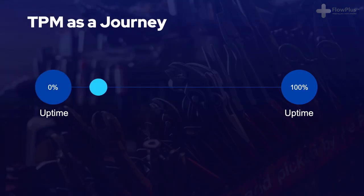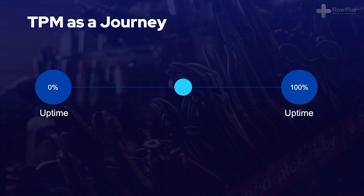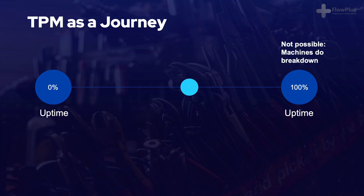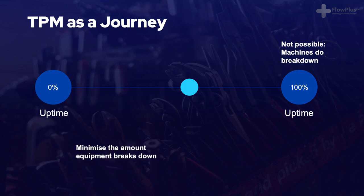I know this is a bit of a strange example, but I think it is memorable and helps convey the change of responsibility that TPM provides. Just like how lean is the ongoing pursuit and journey towards 100% value add, TPM is on a sliding scale from 0% uptime towards 100% uptime and zero downtime. It is about taking steps in the right direction towards this state, continuously moving closer to it. The fact of the matter is, machines do break down, people make mistakes and things do go wrong, however much you try and prevent them from happening.